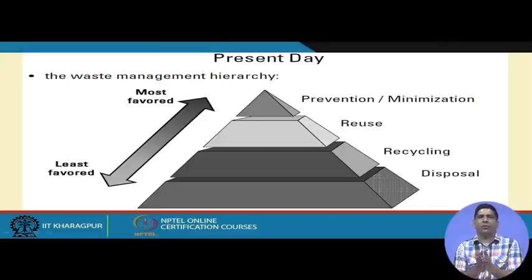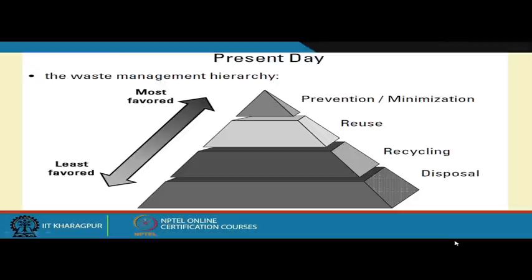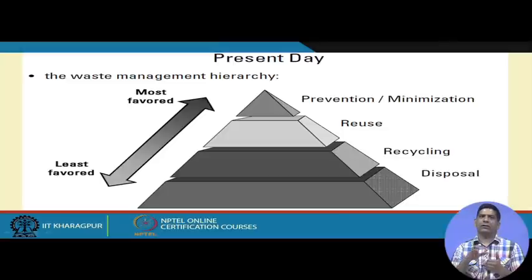What most rules around the world favor is to prevent and minimize — we have to reduce the waste. First of all, we want to prevent waste from being produced, so produce less and less. Even if it is produced, try to minimize the quantity. That is the most favored option. The second favored is reuse; if you can reuse the waste rather than throwing it away, then recycle, and finally disposal.